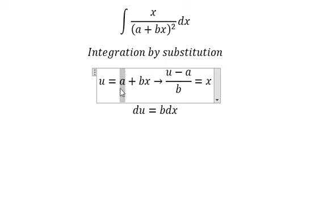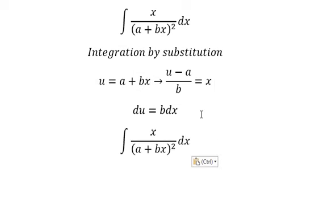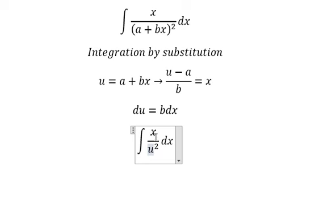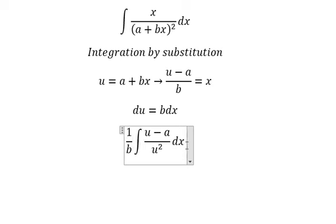This one, the constant, gives us zero. This one we have number one. We change u for x, we change x for this one.